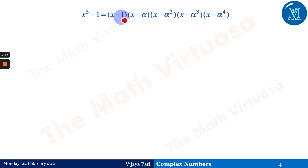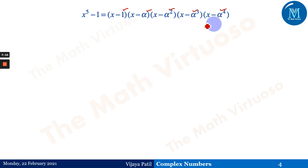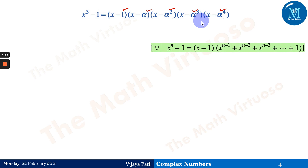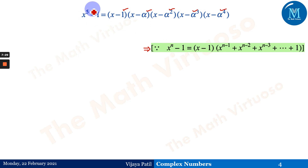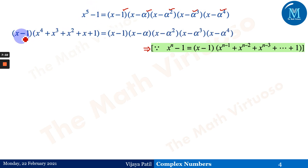So x⁵ − 1 = (x − 1)(x⁴ + x³ + x² + x + 1). The left-hand side equals the right-hand side, so we can cancel (x − 1) from both sides, leaving x⁴ + x³ + x² + x + 1 = (x − α)(x − α²)(x − α³)(x − α⁴).